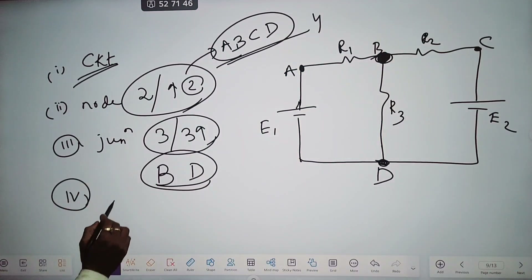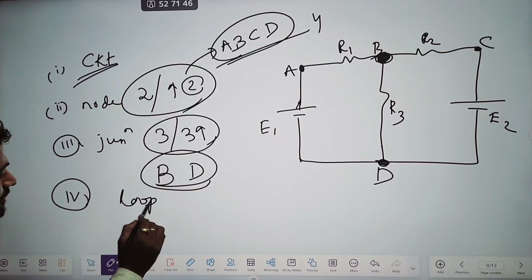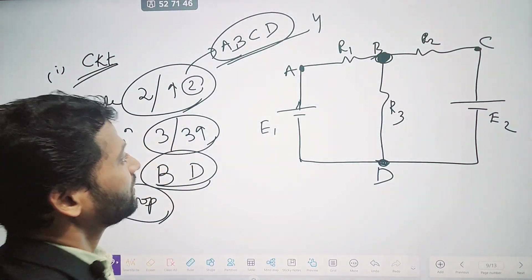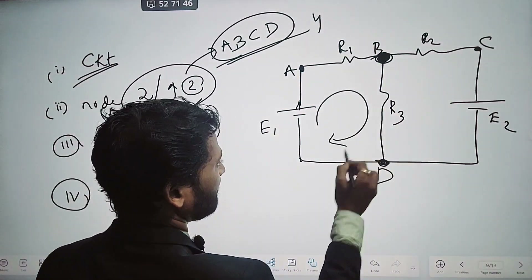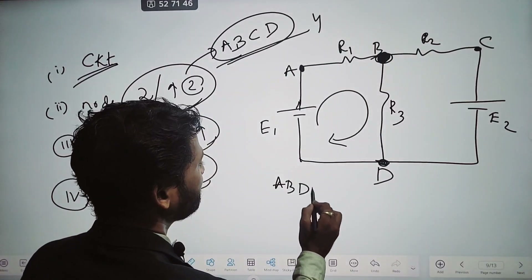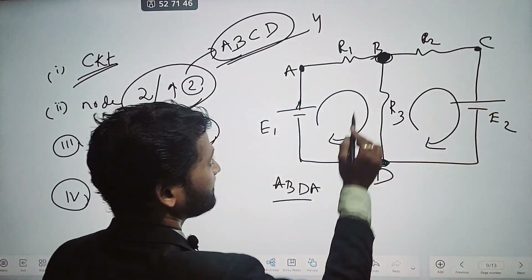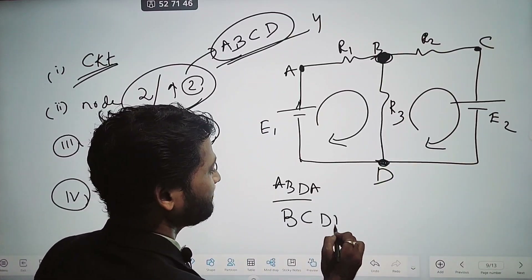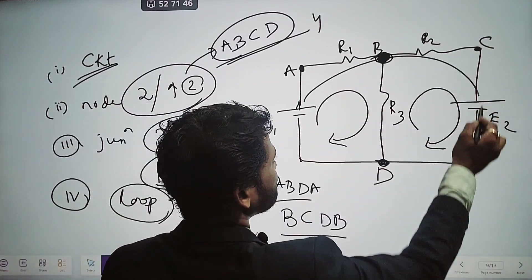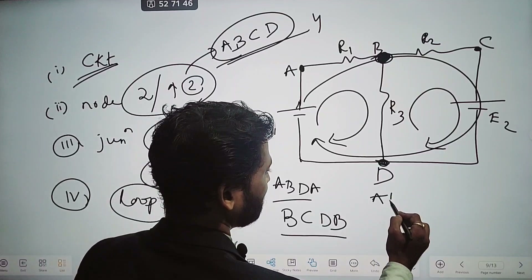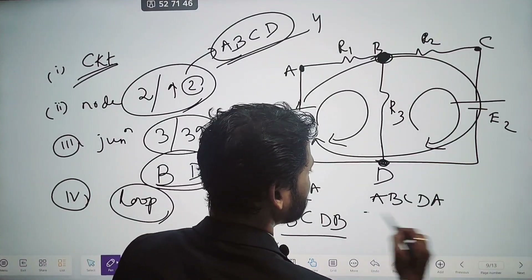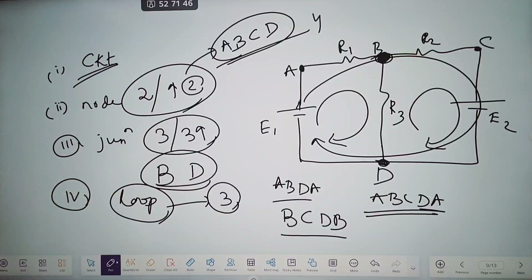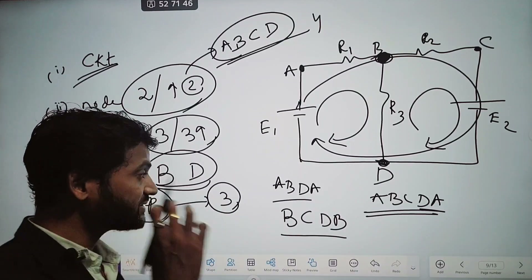Next is loop. A loop is any kind of closed path. For example, A-B-D-A is a loop; B-C-D-B is a loop; and A-B-C-D-A is also a loop. So in this circuit there are three loops. A loop is simply a closed path.